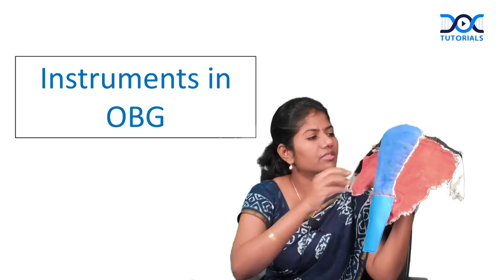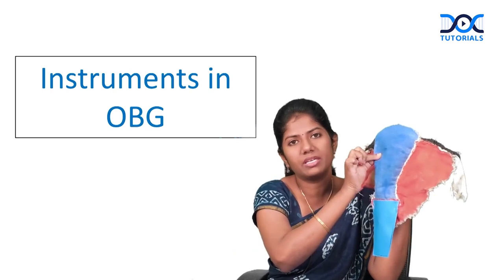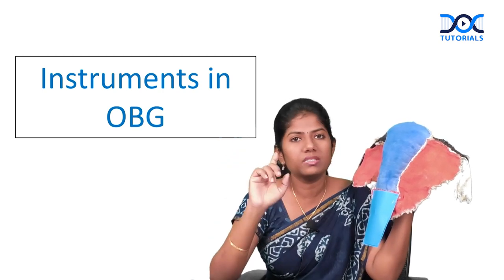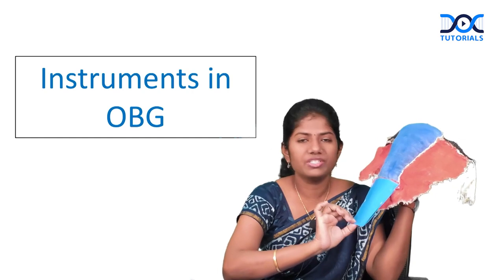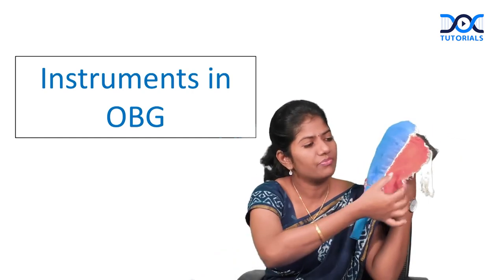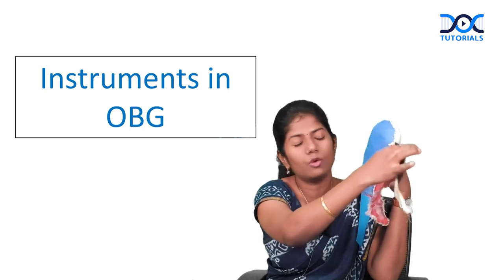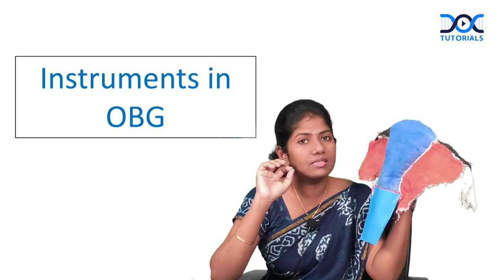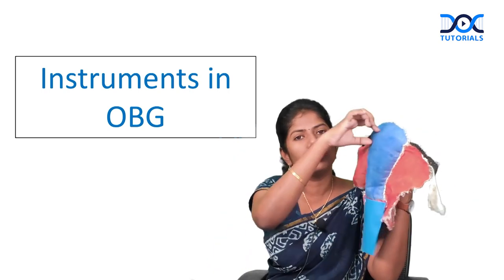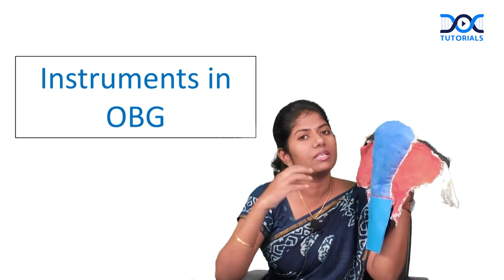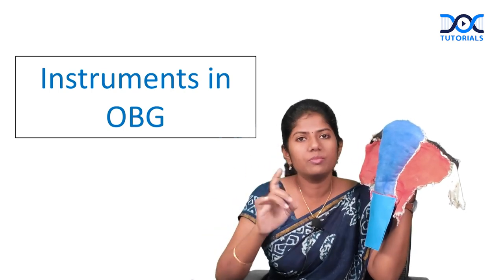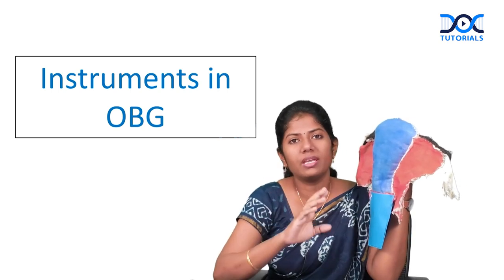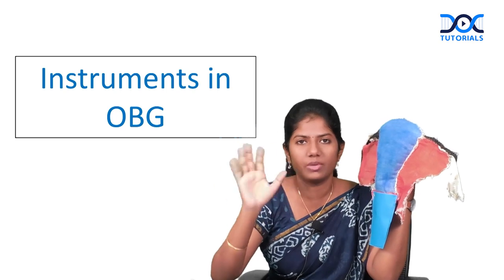A non-pregnant uterus is firm in consistency, a non-pregnant cervix is also firm, whereas a pregnant cervix is soft. The vagina is usually soft, and the broad ligament and fallopian tubes are delicate structures. You will not use the same instrument to hold every structure because their consistencies are different. The instrument you use should not damage the tissue and should expose the area you want to see in a better way.